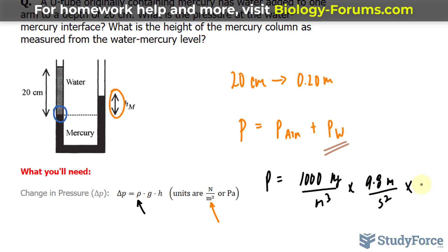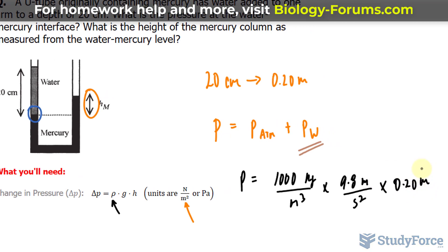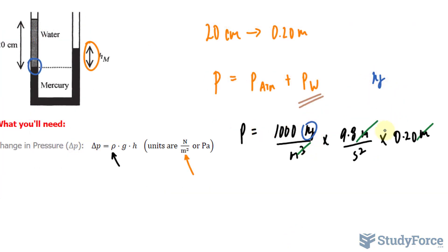Notice that the units M, M, and two of these will cancel out, giving us the units kilograms per meter times second squared.